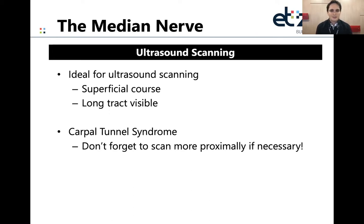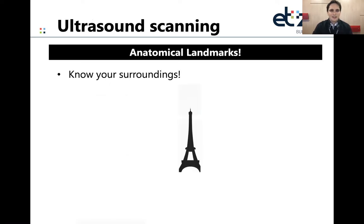The median nerve is also one of the most investigated nerves because carpal tunnel syndrome is very well visualizable with nerve ultrasound, and there are numerous other conditions associated with abnormalities in the median nerve. So if you find any abnormalities proximally, don't forget to scan the entire nerve.